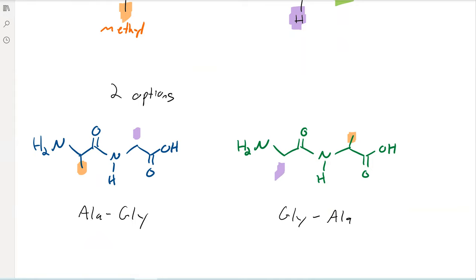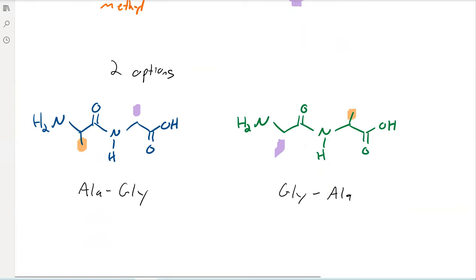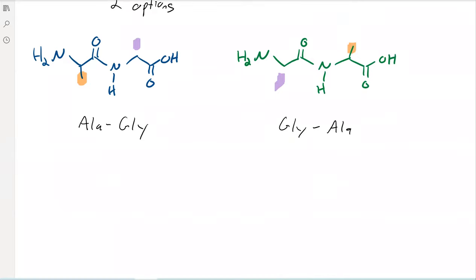So you'll notice that I've actually drawn them in the same orientation. And this is by convention the way that we draw them. So by convention, it always goes from the N to the C terminus. And so the N refers to the amine. So that's the N terminus. And then the C refers to the carboxylic acid. So that's the T or the C terminus.